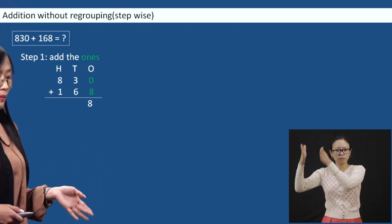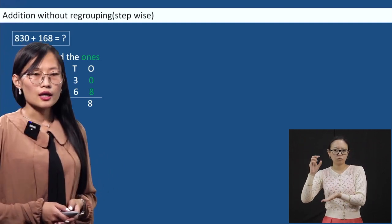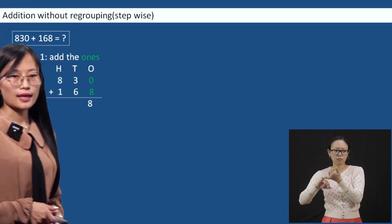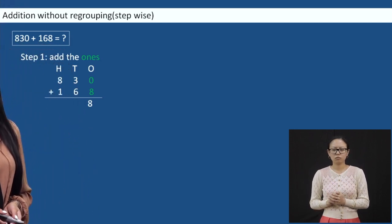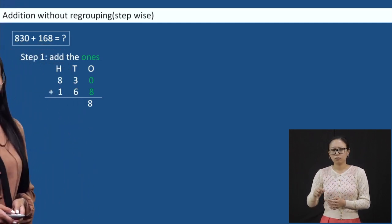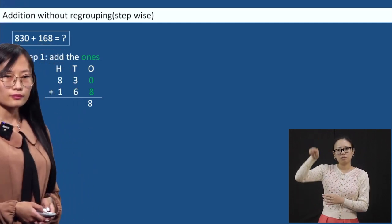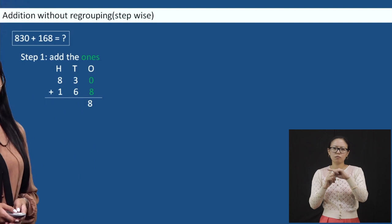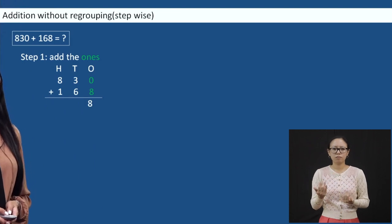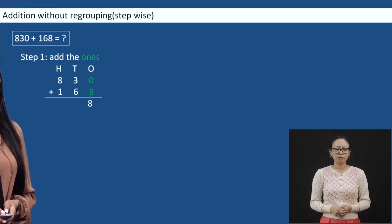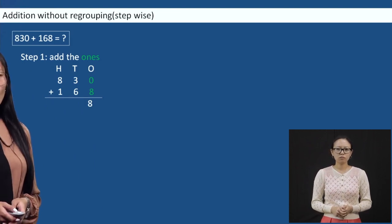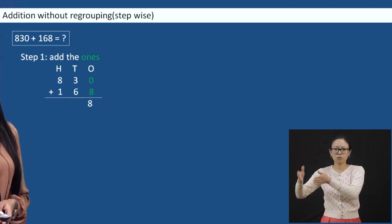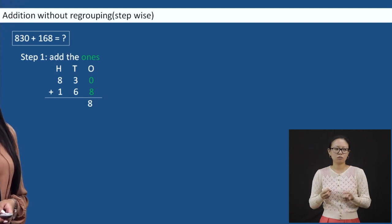Addition can be done in both ways — it can be upward or it can be downward. So we will start adding from ones: zero plus eight is eight.